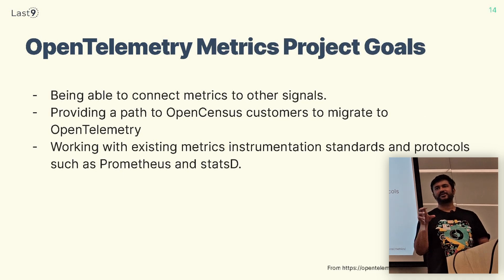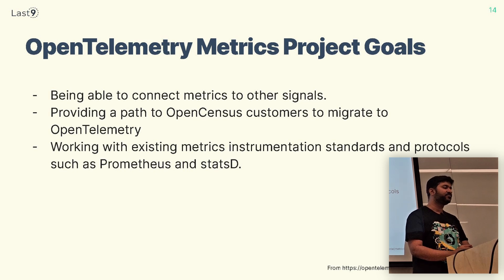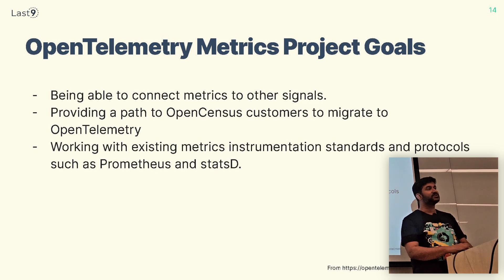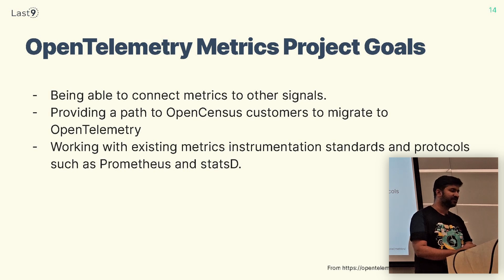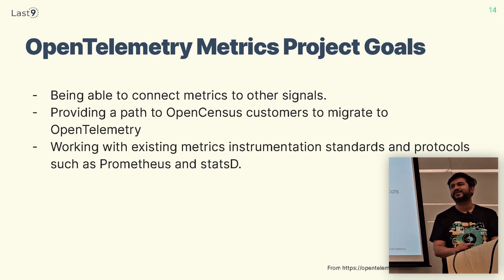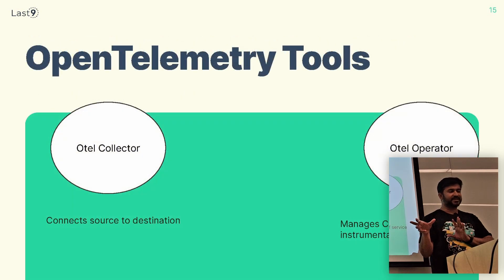With respect to metrics, there were certain project goals when OpenTelemetry decided to support metrics. One was to connect metrics to traces and logs. Another was to provide a migration path for users of the old OpenCensus library so they could switch to OpenTelemetry. And then working with existing protocols like Prometheus, so people can switch between tools and leverage existing tooling without learning something completely new.